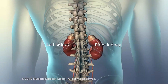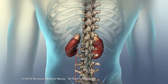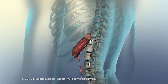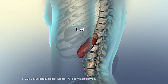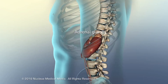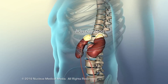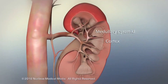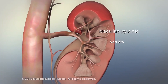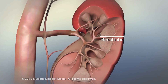The kidneys are located on either side of the spinal column in the posterior abdominal wall. Adrenal glands sit on top of the kidney. The medullary pyramid and outer cortex compose the renal lobe.